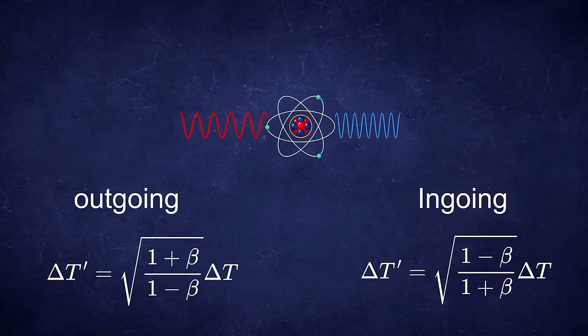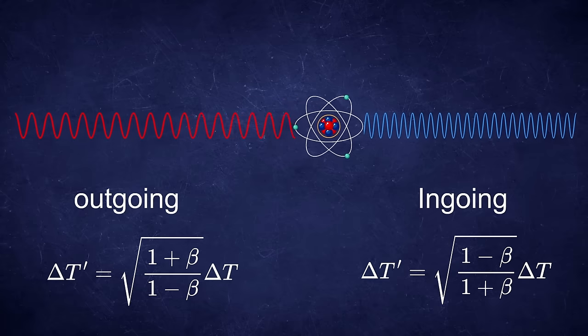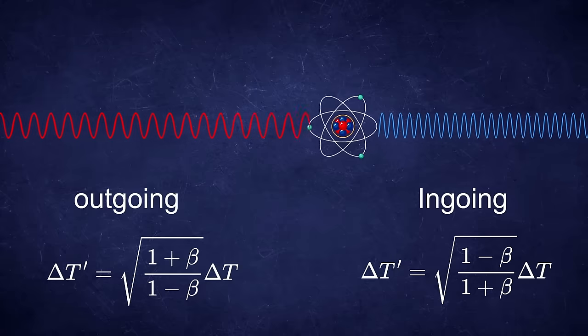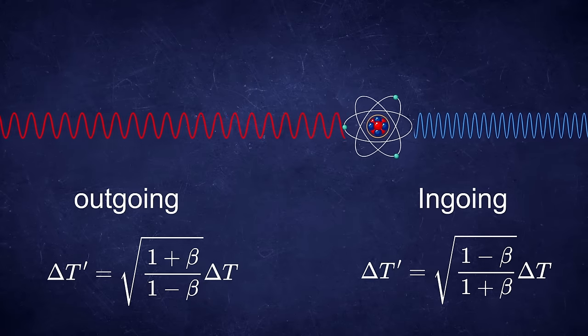In special relativity the situation is kind of different though, because time dilation is a real fundamental effect and not illusion. If you move relative to a certain source, the longitudinal Doppler effect would look like this. And it is simply the combination of the classical longitudinal effect and the transverse effect.